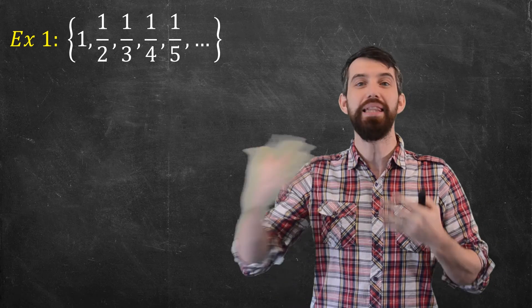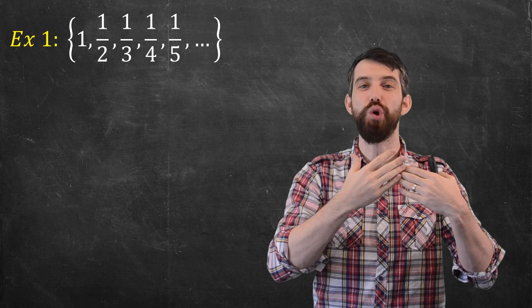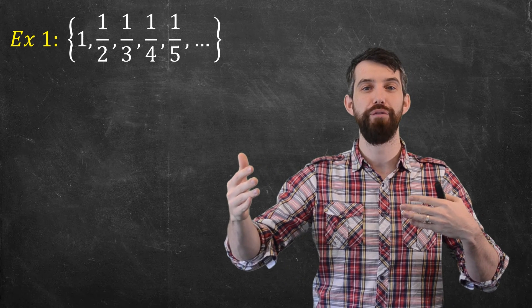A sequence is just a list. There's a first element, a second element, a third element, and you have this ordered list that goes on forever.